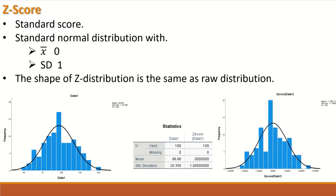Once this data is transformed into z-scores, as shown in the right-hand side histogram plot, the data is still normally distributed. The shape of the curve is similar in both, and the z-distribution has a mean of 0 and standard deviation of 1. So transforming raw data into z-scores does not change the distribution of the data — the data stays normal. The z-score is for standardizing the data.